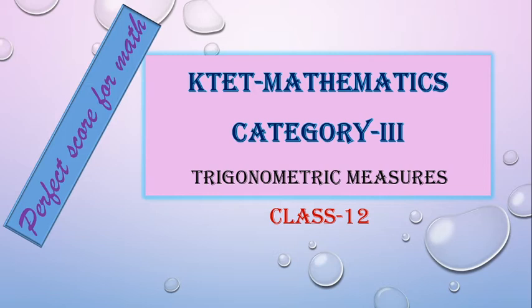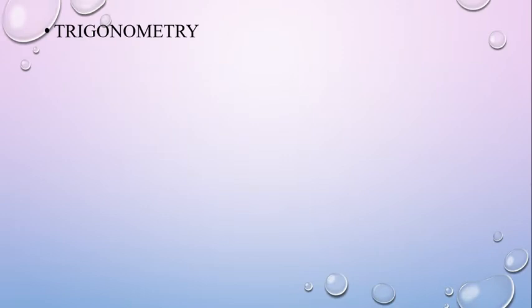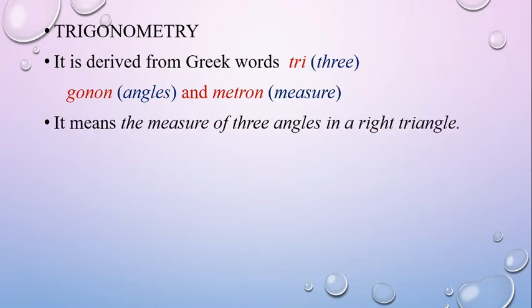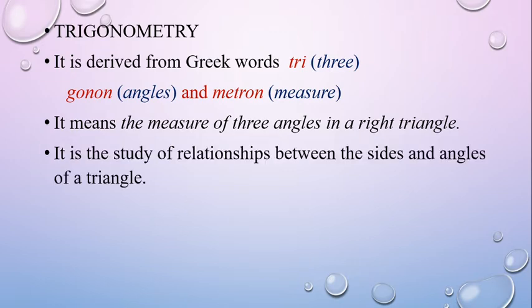In the next topic, trigonometric measures. Trigonometry is derived from the Greek words: 'tri' which means three, 'gon' means angles, and 'metreon' means measure.